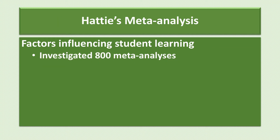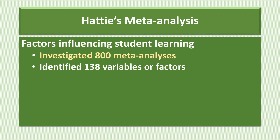In 2009, Hattie published the results of a meta-analysis of 800 meta-analyses — the results of decades of research on factors impacting student achievement. He used the Presage Process Product Framework to organize his findings. Overall, he identified 138 factors or variables that he deemed to be significant.